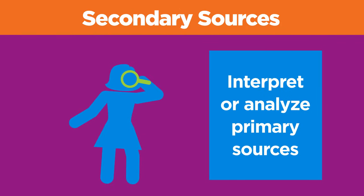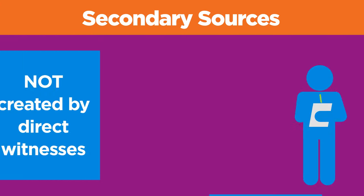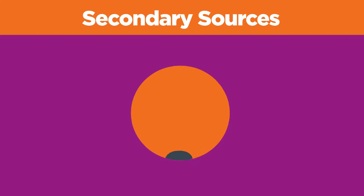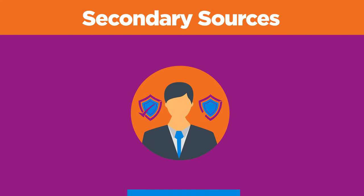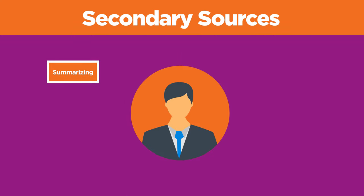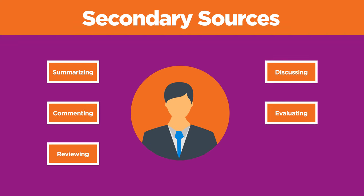In contrast, secondary sources interpret or analyze primary sources. They are not created by those who have directly witnessed what they're describing. Instead, the authors of secondary sources are often experts in their field who build upon information from primary sources by summarizing, discussing, commenting on, evaluating, reviewing, drawing conclusions, and so on.